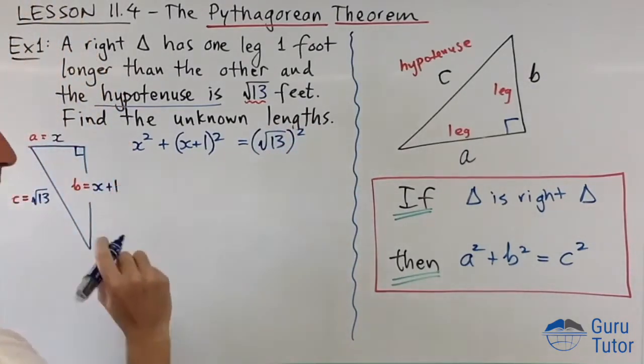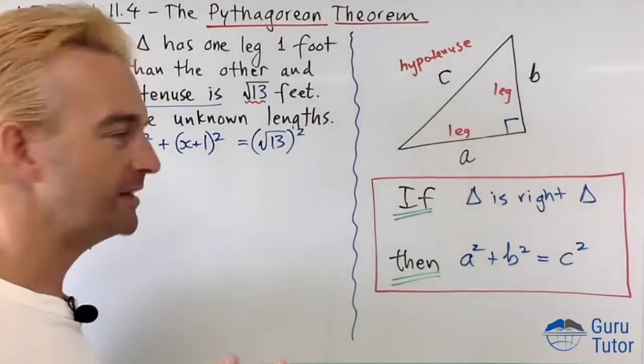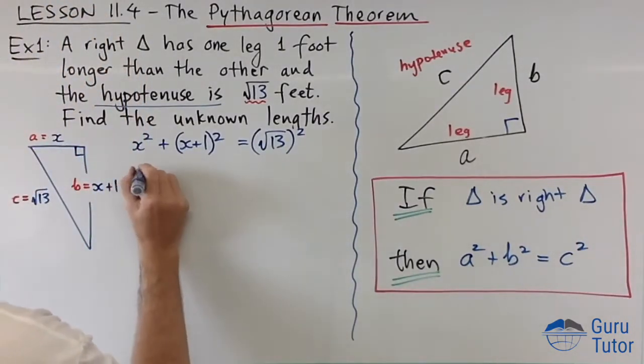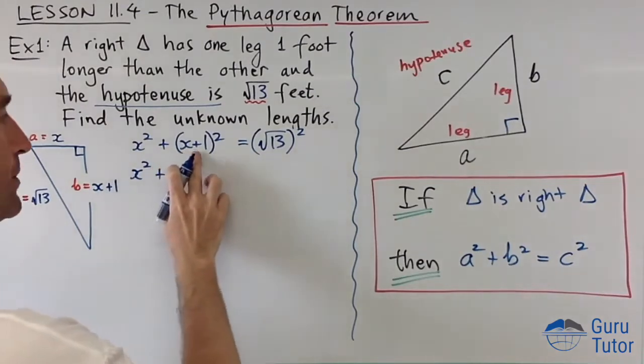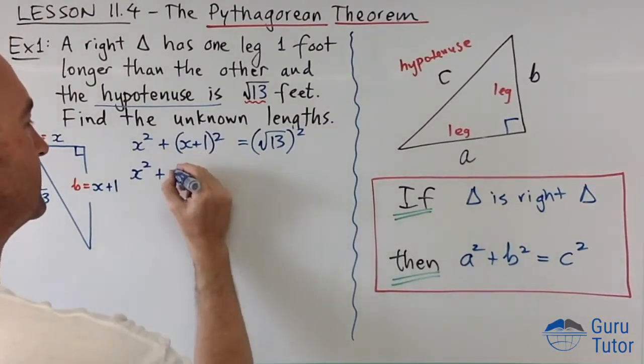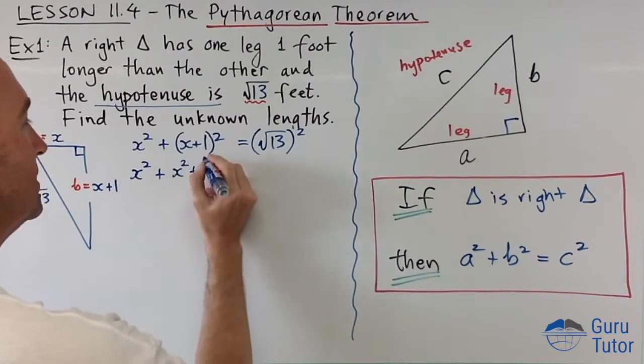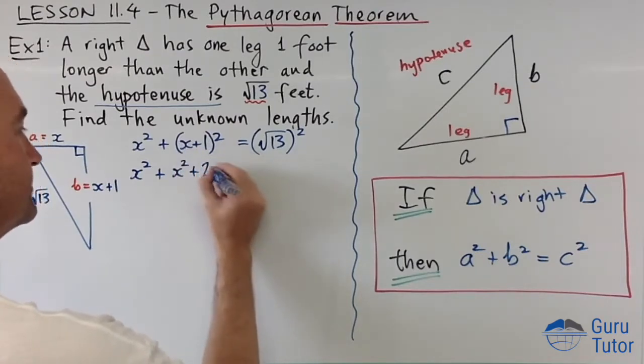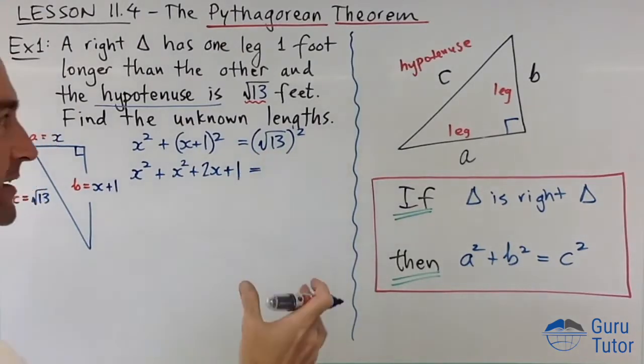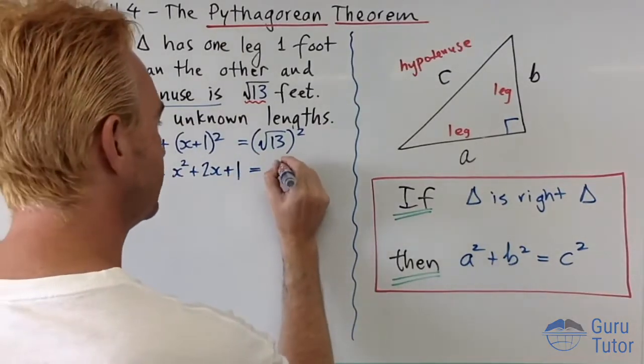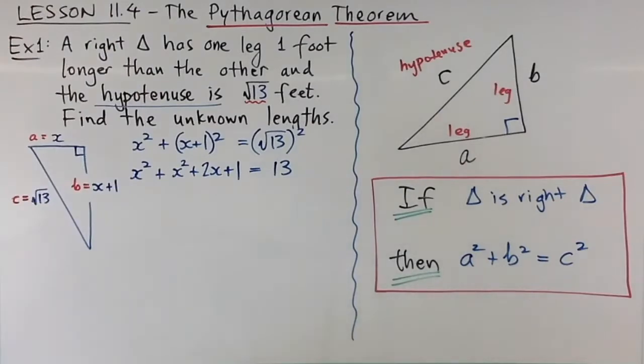Now, a lot of the algebra that we've done in the second semester comes back here. Check this out: x squared plus, now we've got to use our special product here. This is a plus b all squared, right? So that is a squared plus two times a times b plus b squared. One squared is one. Root 13 squared, okay, that's like squaring a square root, so we just end up with a number inside, and we get that.